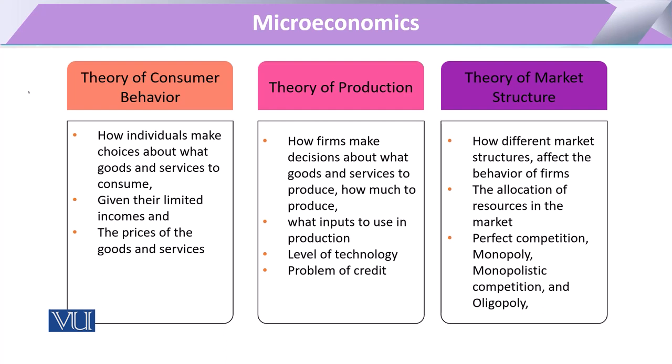Under microeconomics, we deal with several theories. The theory of consumer behavior provides insight into how individuals make their choices, how they allocate their income for the attainment of their wishes, and how prices of goods and services are determined. The theory of production examines how firms allocate their budget and available resources for production, how they prioritize resources as per productivity, pricing, cost, and the level of technology available to them.